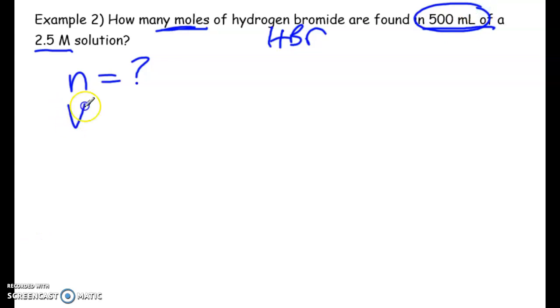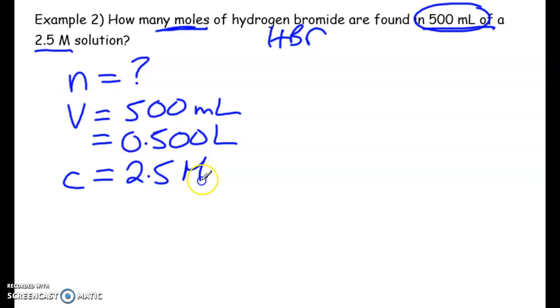So always look at the units, right? So the volume is 500 milliliters. We're going to convert that right away, because we cannot deal with milliliters if we're dealing with moles per liter. And we are given the concentration, 2.5 capital M, which is the same thing as saying moles per liter.